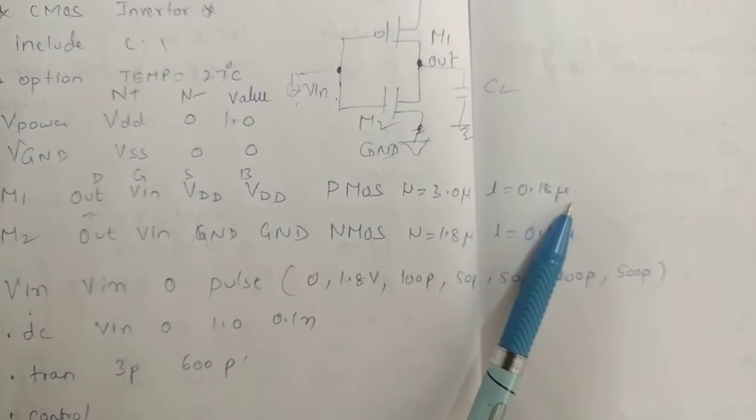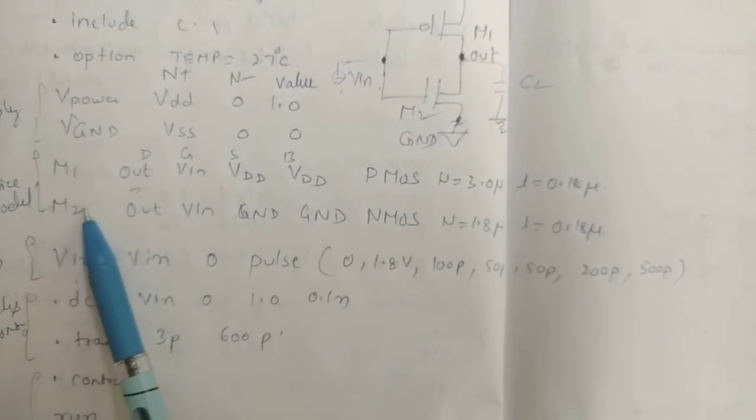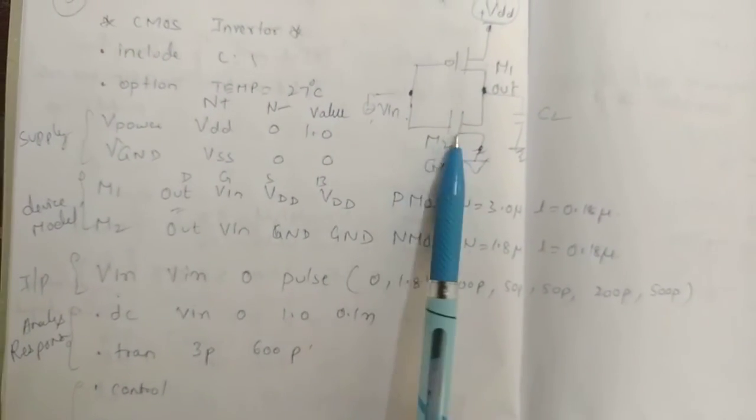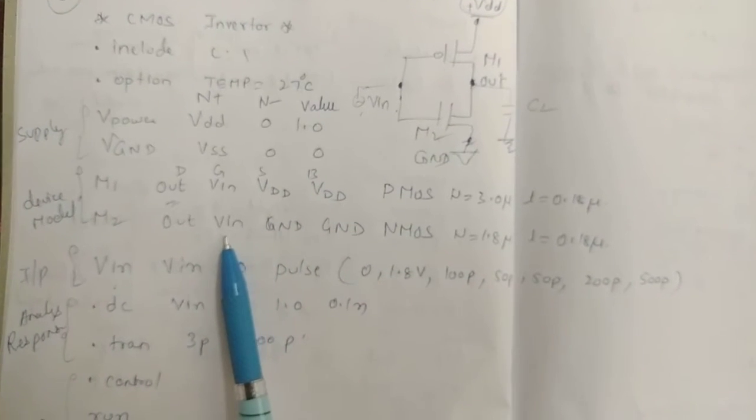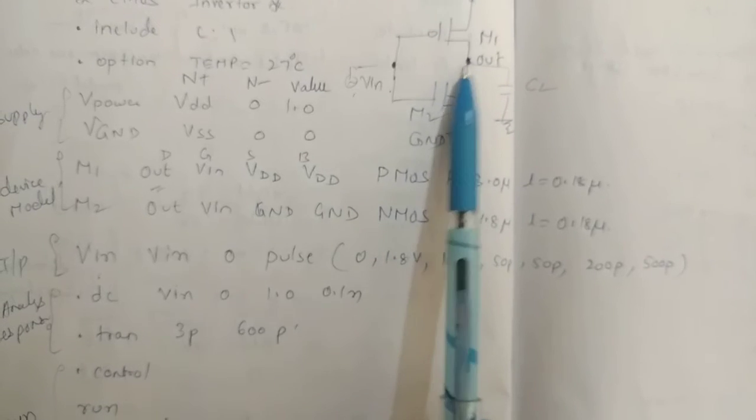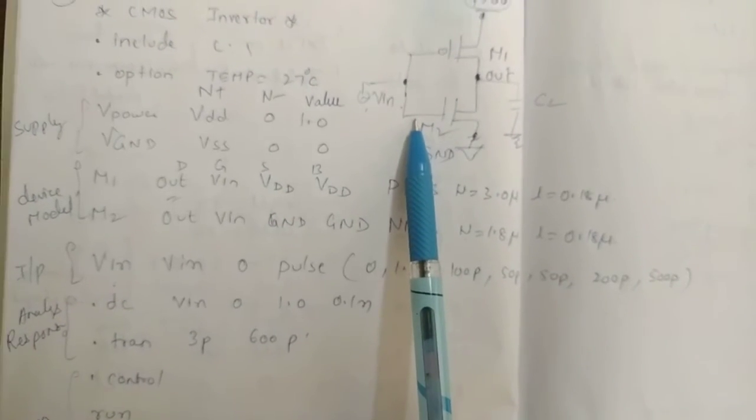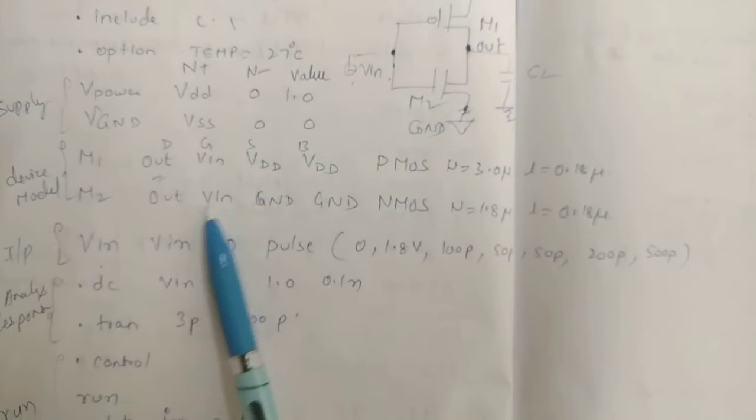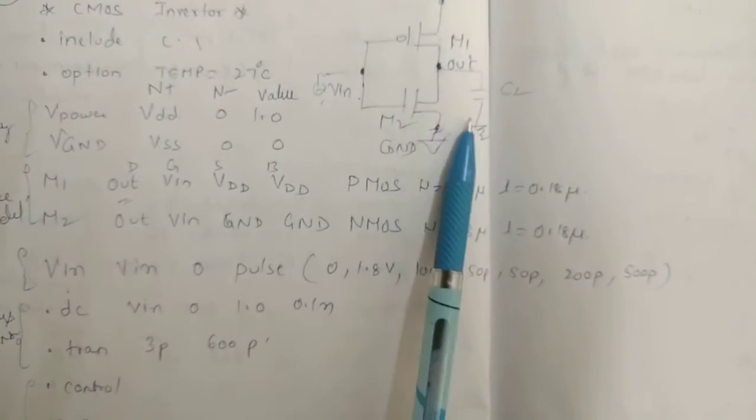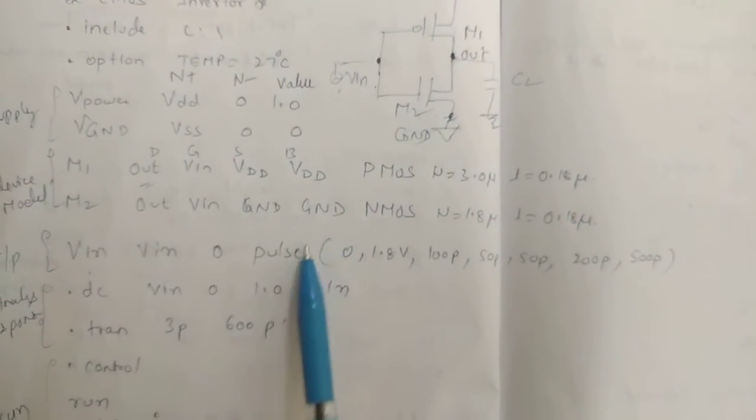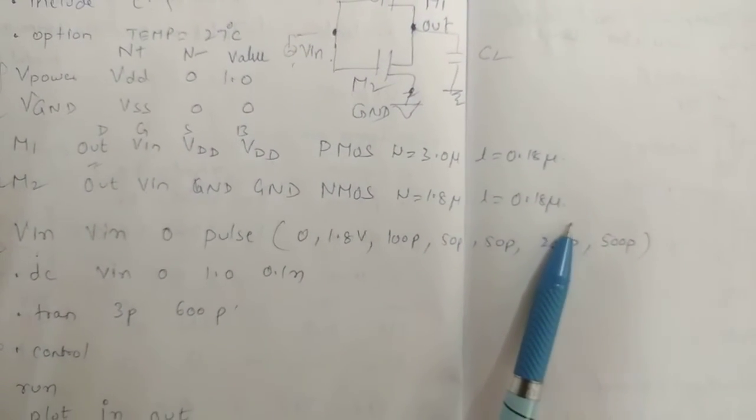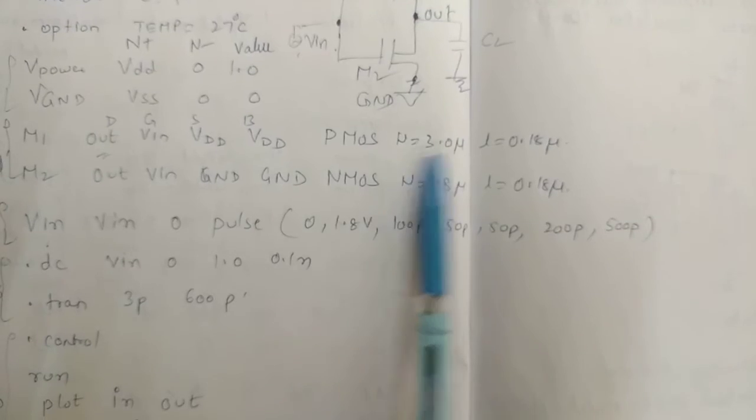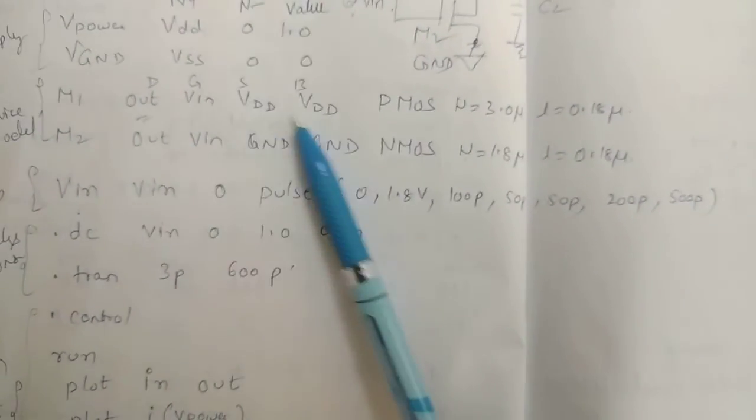Similarly, M2 out. This is your drain, this is your gate, gate is connected to VIN. This is connected to ground, and you know in NMOS substrate also is ground. So NMOS width I took 1.8 and length equal to 0.18. This should be two times more width.